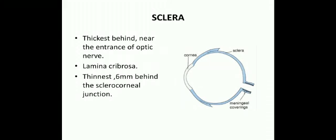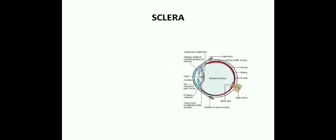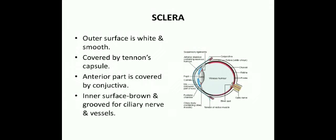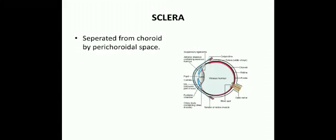The sclera is thinnest six millimeters behind the sclerocorneal junction, where all the recti muscles are inserted. The outer surface of the sclera is white and smooth, covered by Tenon's capsule, and the anterior part is covered by conjunctiva. The inner surface is brown and grooved for ciliary nerves and vessels. The sclera is separated from the choroid by the perichoroidal space.